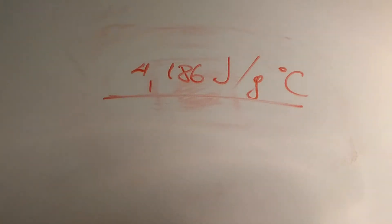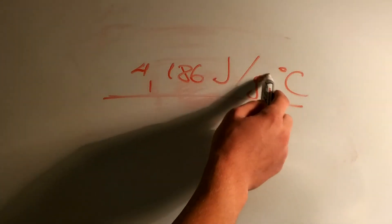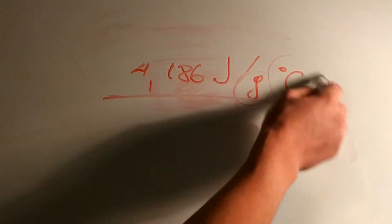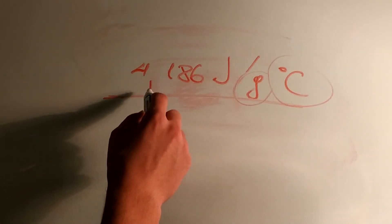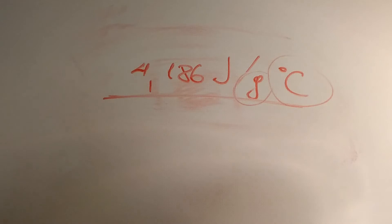So we can say that in order to heat up 1 gram of water and to heat it 1 degree Celsius, we need 4.186 J of energy.